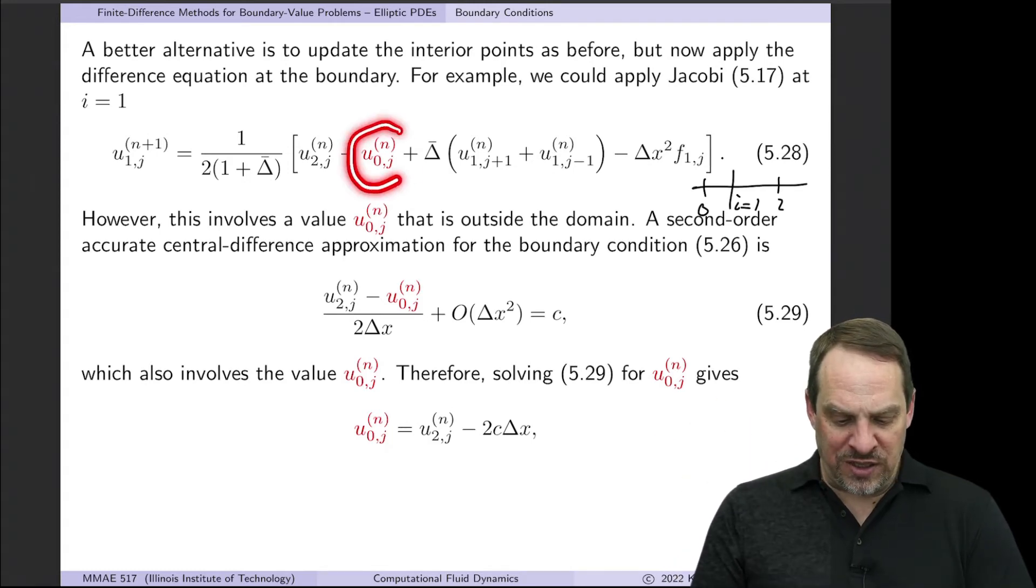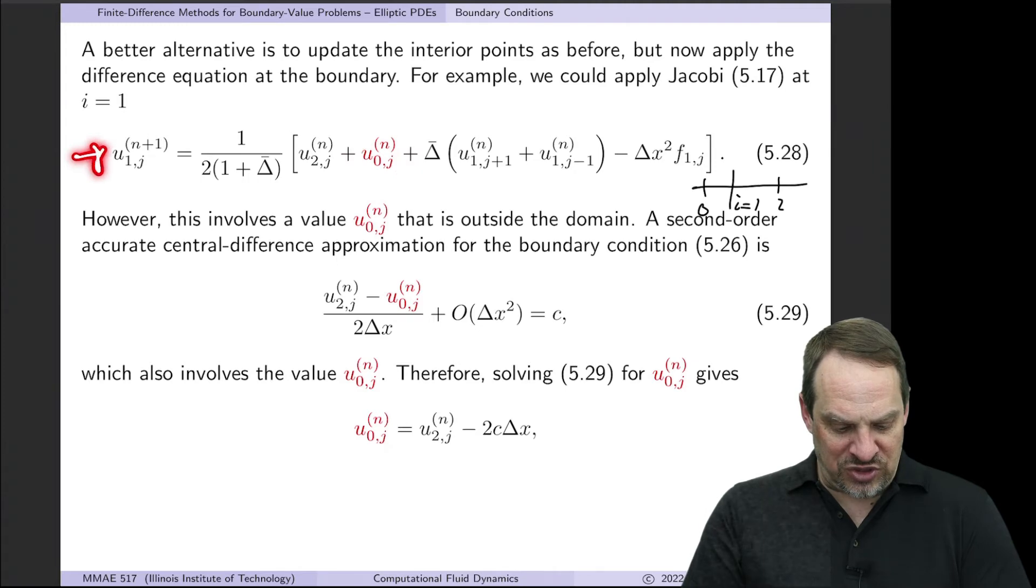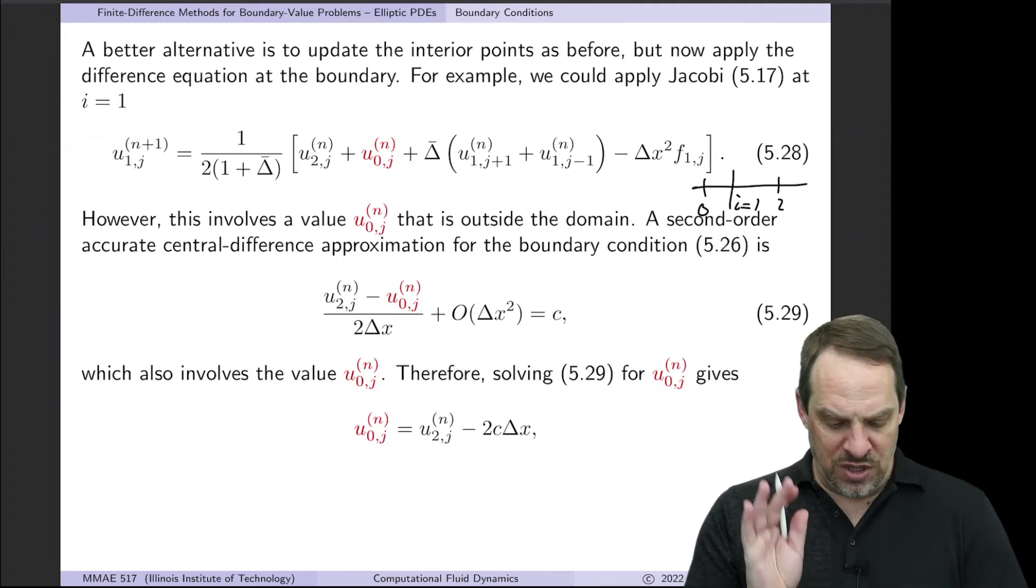So I've highlighted in red this problem point. Some people call it a ghost point. So I need to eliminate this from this expression for U1J. The way we do that is we take our differential equation.